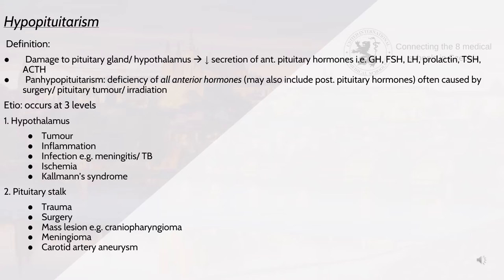The causes occur at three levels. At the level of the hypothalamus, this may be due to tumours, inflammation, infection such as meningitis or tuberculosis, ischemia or Kallmann syndrome. Kallmann syndrome is a rare genetic condition where there is a decrease in the gonadotropin-releasing hormone produced from the hypothalamus, leading to a delayed or absent puberty.